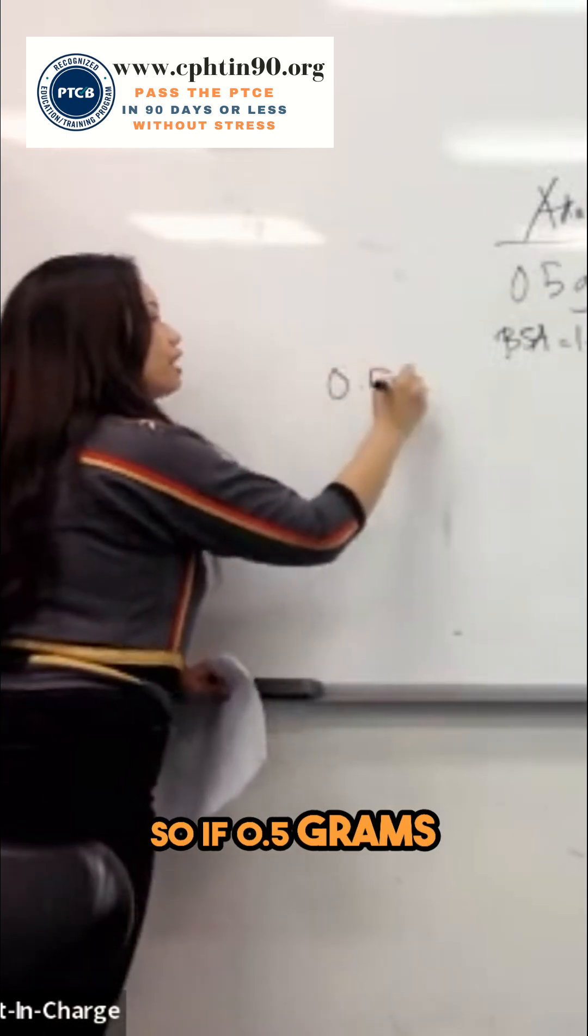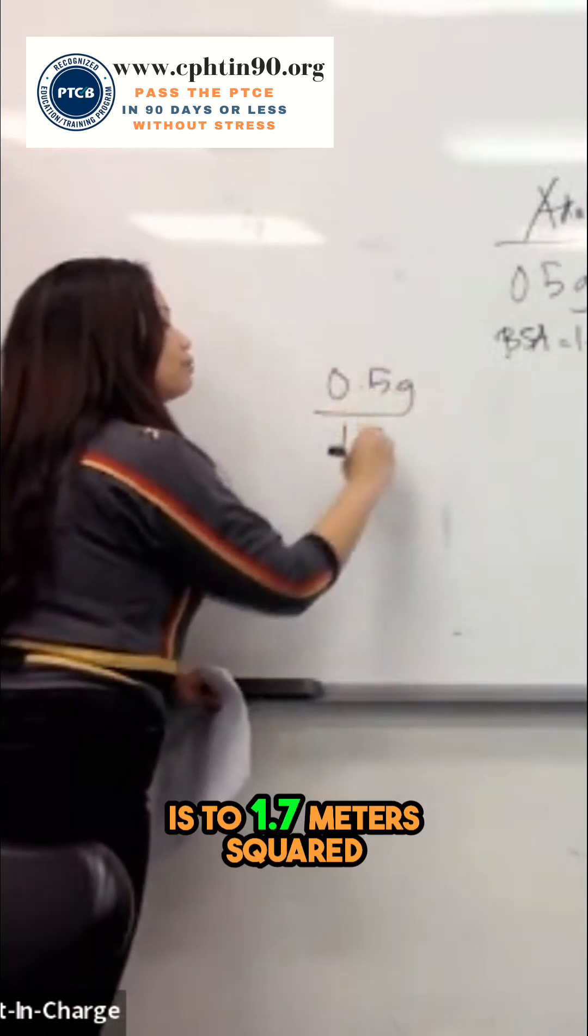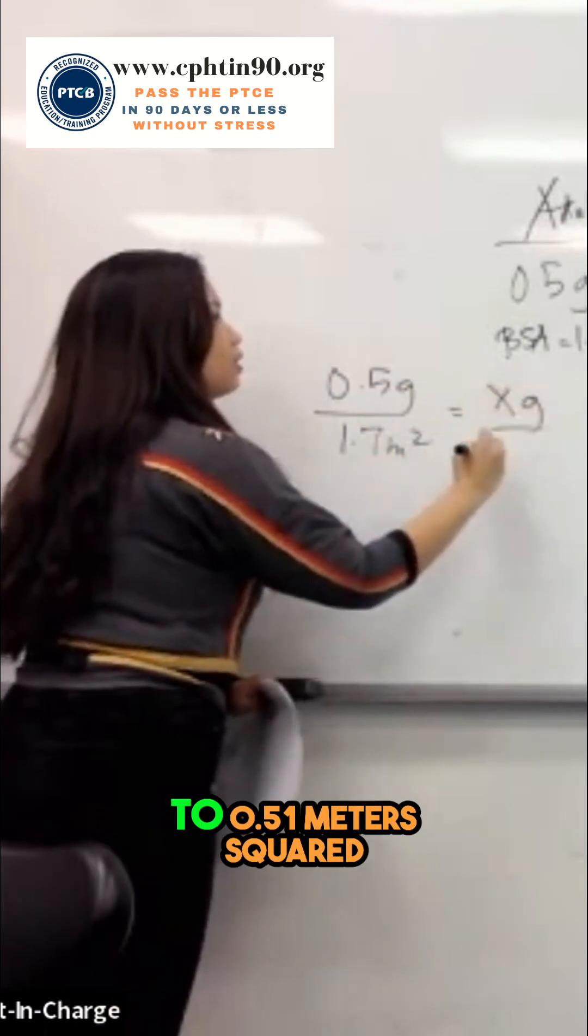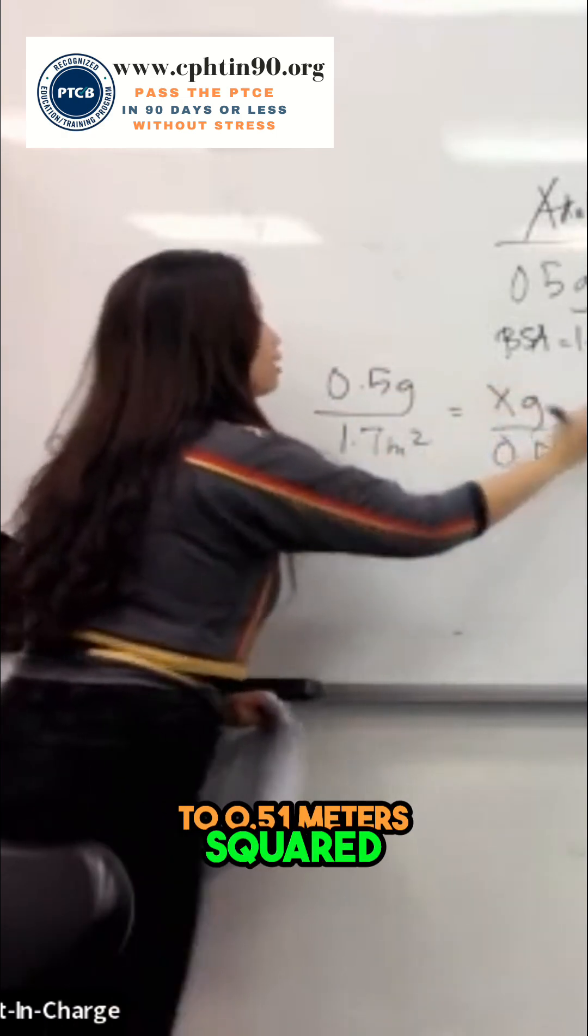So if 0.5 grams is to 1.7 meters squared, then X grams is to 0.51 meters squared, okay?